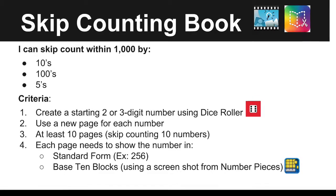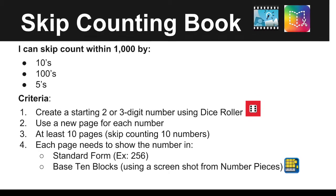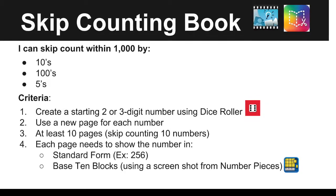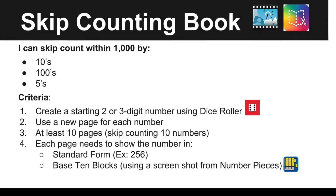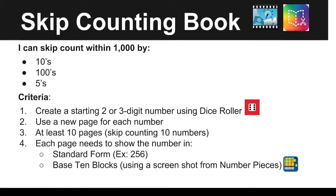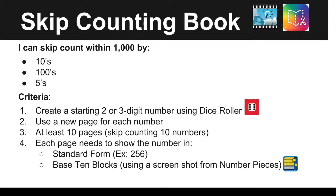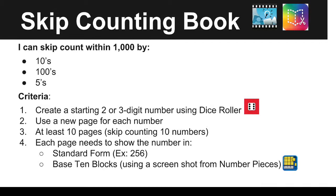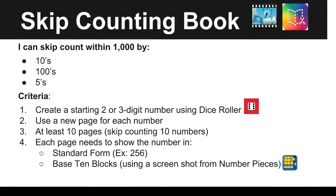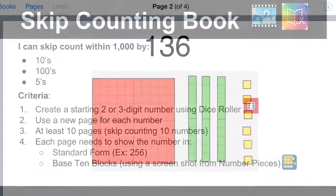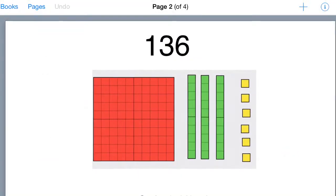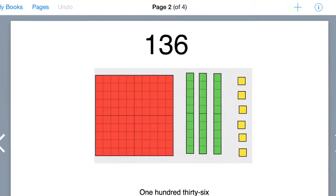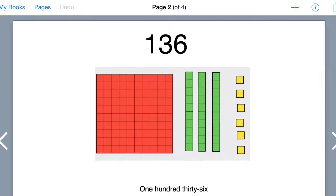The nice thing about Book Creator for this project is that it has a Pages ability to see all pages at once, which really helps students double check that they are accurately skip counting numbers in a row. Here's an example of what one page of a skip counting book may look like.